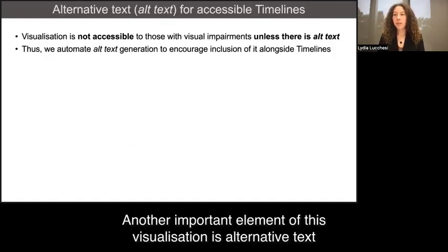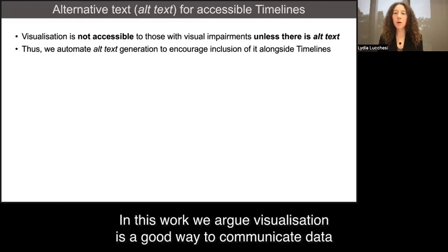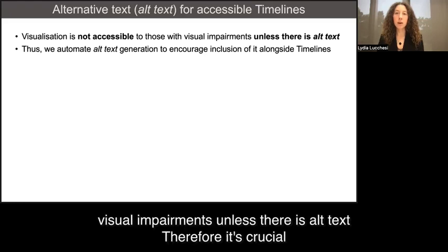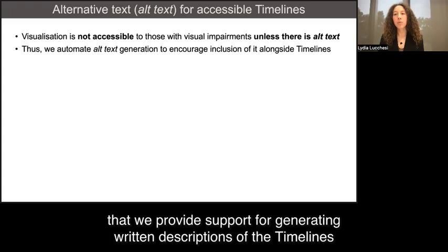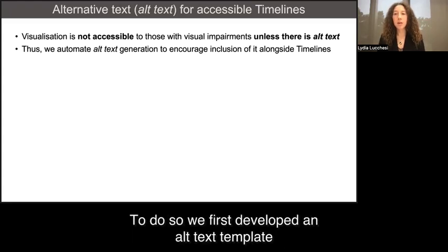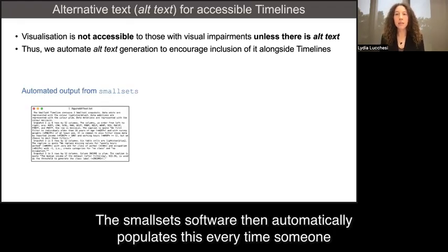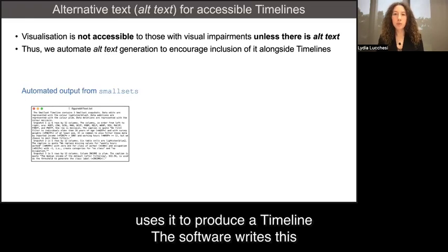Another important element of this visualization is alternative text. In this work, we argue visualization is a good way to communicate data pre-processing decisions. But visualization is not accessible to those with visual impairments unless there's alt text. Therefore, it's crucial that we provide support for generating written descriptions of the timelines. To do so, we first developed an alt text template. The small set software then automatically populates this every time someone uses it to produce a timeline.